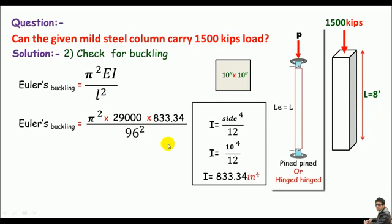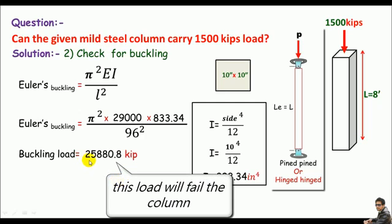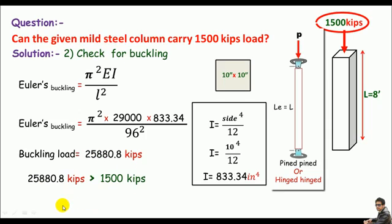Do some math with this equation, you can get the buckling load equals 25,880.8 kips. You can clearly see the buckling load is greater than the applied load. It means the column is okay in buckling. So the column can carry 1500 kips easily without any buckling or compression.